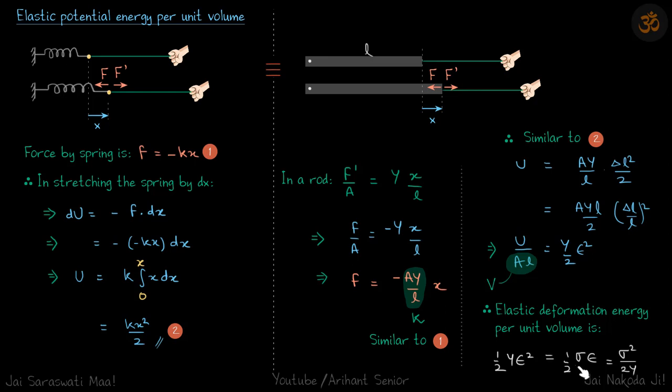It is half stress into strain, and you can write it in terms of stress alone or strain alone. So it can be written as half Y into strain squared, or stress squared by 2Y. But this is the easier way to remember: half stress into strain. Let's derive this formula.